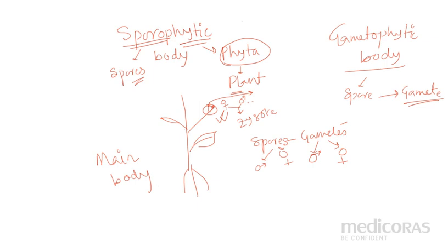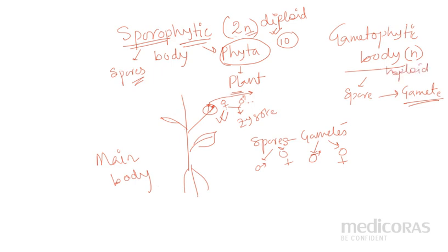And one thing — if you call sporophytic body, commonly, this is a universal truth: the sporophytic body is always diploid. Diploid means if the chromosome number is doubled, we call it diploid. And the gametophytic body is haploid. Haploid means one set of chromosomes is present and the other set is absent.